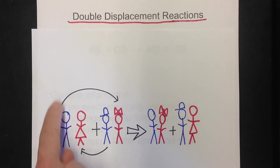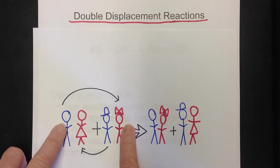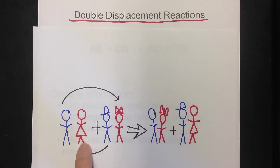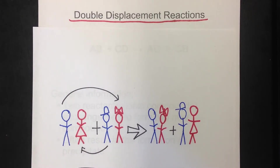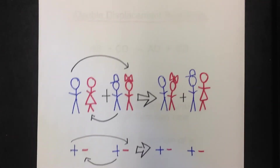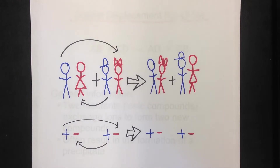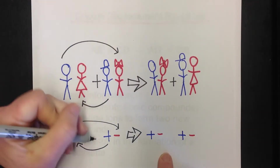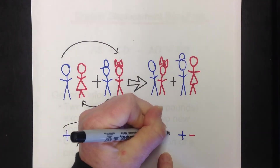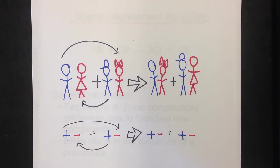You say 'outie, outie' — you put the two outer ones together — and then 'inny, inny' — you put the two inner ones together. If you put them in that order, you will always pair up the correct ions to make the new compounds. It's always positive-negative plus positive-negative, giving you two new pairs that are also positive-negative, positive-negative.